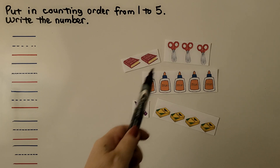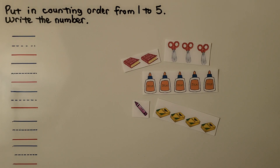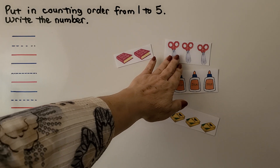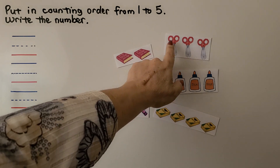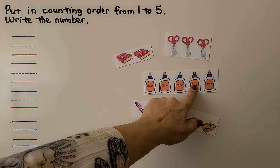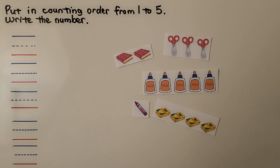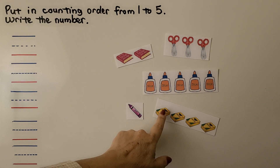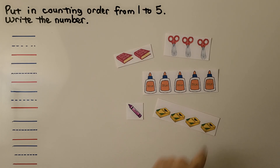Here we have some school supplies. We need to put them in counting order from one to five and write the number. I can see there are two books, three scissors, five bottles of glue, one crayon, and four boxes of crayons.